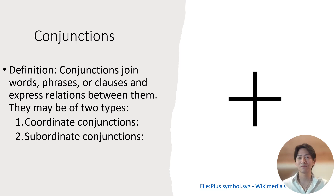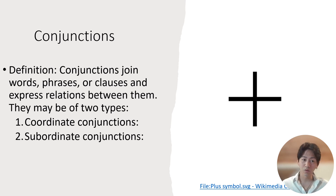Let's begin by defining what a conjunction is. Most people understand inherently what a language is and how conjunctions function, but may be less familiar with specific terms or concepts. Conjunctions join words, phrases, or clauses and express relationships between them. They may be of two types: coordinate conjunctions and subordinate conjunctions.